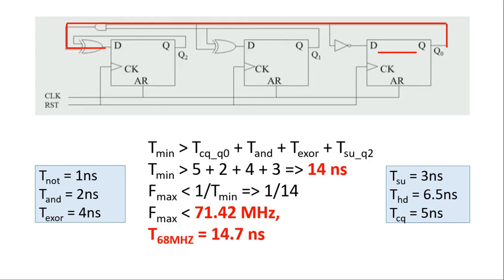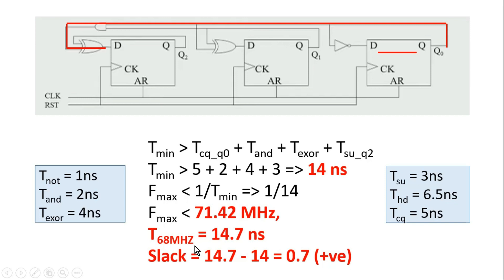Now I will tell you something very important — the slack. The slack equals the expected time period at 68 megahertz, which is 14.7 nanoseconds, minus the actual time period of 14 nanoseconds. Slack = 0.7 nanoseconds, which is positive. Positive slack means there will be no setup violation.